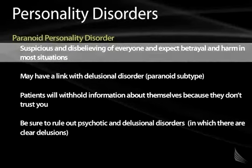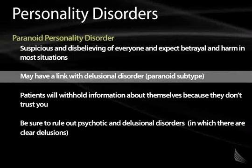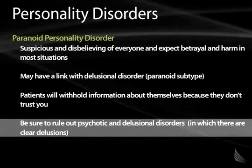Paranoid personality disorder involves a pervasive sense that people are out to get them — suspicious, but not a full-blown delusion. They may also have a delusional disorder of the paranoid subtype. A clinical example: a colleague who was always convinced she was assigned extra patients, exhibiting a general sense of mistrust. Rule out psychotic or delusional disorders.